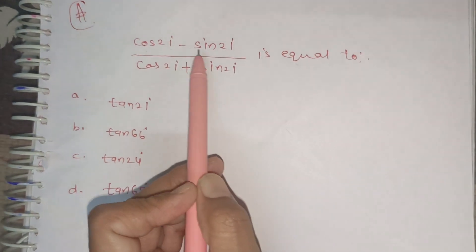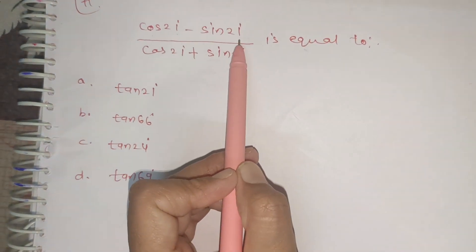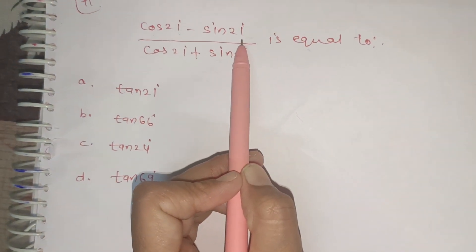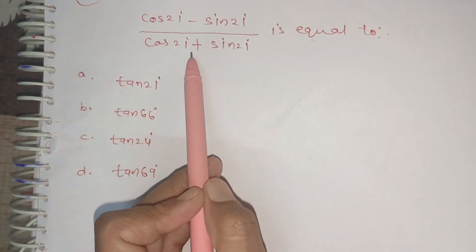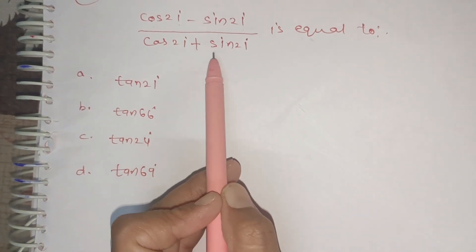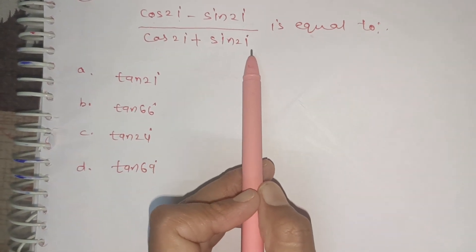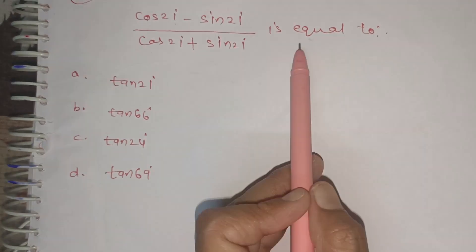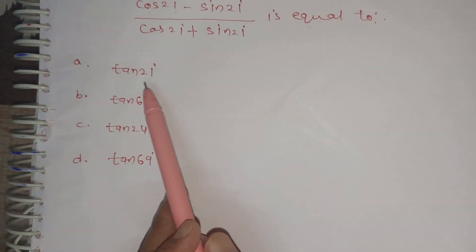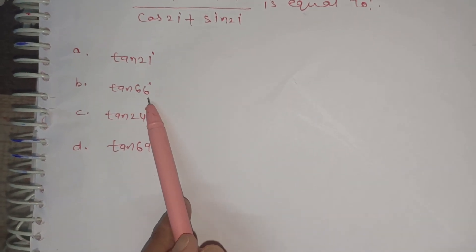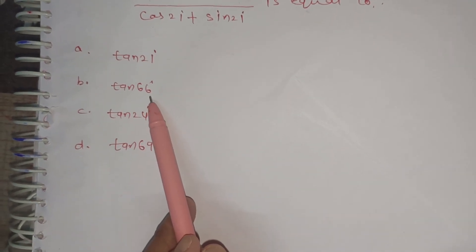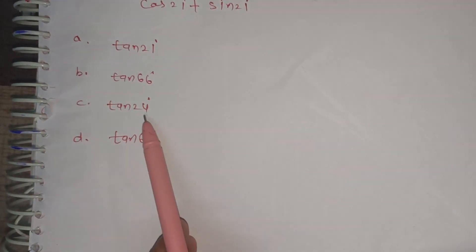Cos 21 degree minus sin 21 degree upon cos 21 degree plus sin 21 degree is equal to: tan 21 degree, tan 66 degree, tan 24 degree, or tan 69 degree.